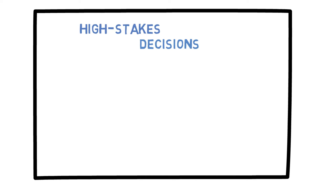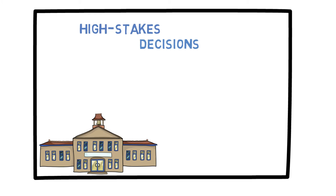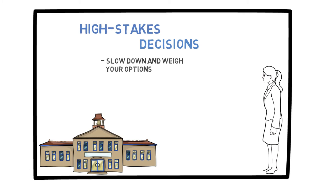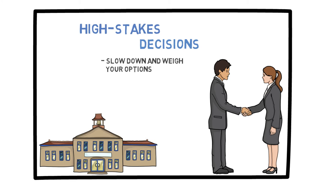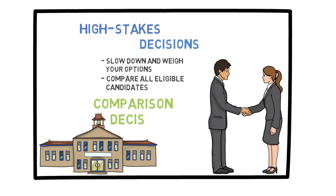While satisficing is great, sometimes the stakes are a little bit higher, and we need to look at all of our options more carefully. Clothes or grocery shopping are pretty low-stakes scenarios, but when it comes time to make a decision about which college to attend, you want to slow down and weigh your options. Another good example would be a manager interviewing potential employees — they should not just hire the first person who fits their criteria, but should compare all eligible candidates. This can be complex because you could have two equally qualified candidates and still not know who would be the better employee once hired.